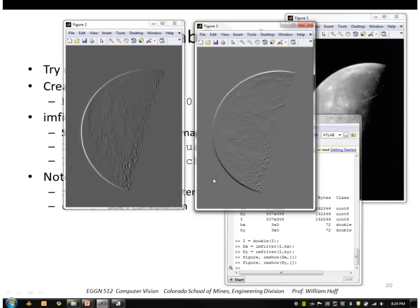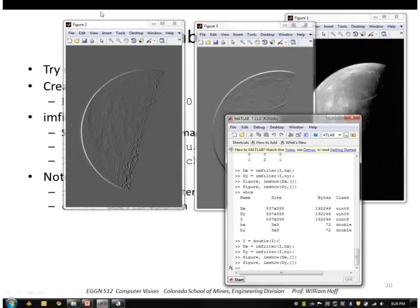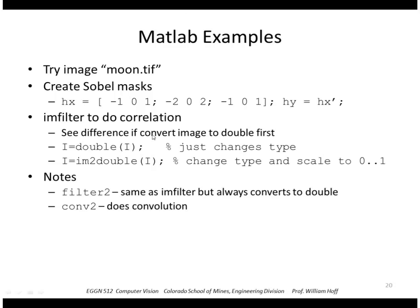So just a point here, I could have also used this function IM to double. This also converts the image to type double, but it scales it to between 0 and 1. If I just did double, it doesn't change the values, it just converts it to double. And instead of using IM filter, I could have used filter 2 or conv 2, which do very similar things. Filter 2 always converts to double, and conv 2 does a convolution instead of a correlation.